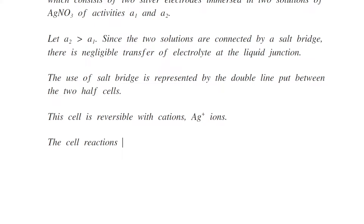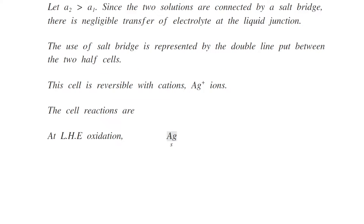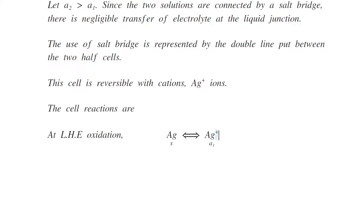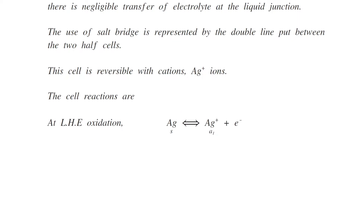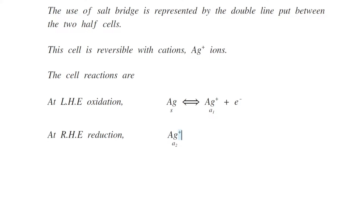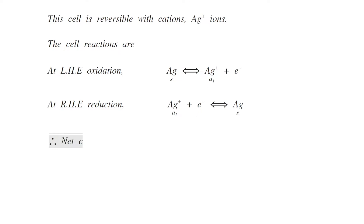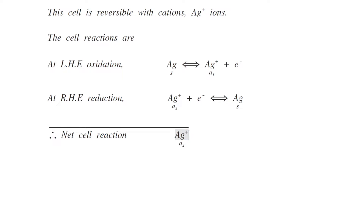The cell reactions are: at the left-hand electrode, oxidation takes place — solid silver dissolves into silver ions of activity A1, and one electron is liberated. At the right-hand electrode, reduction takes place — silver ions of activity A2 combine with one electron to produce solid silver. The net cell reaction is the combination of these two: silver ions of activity A2 are converted into silver ions of activity A1.